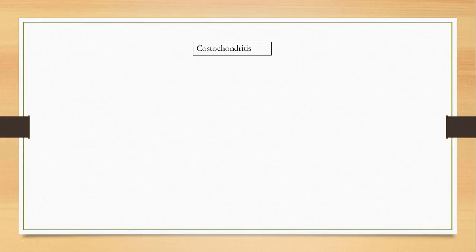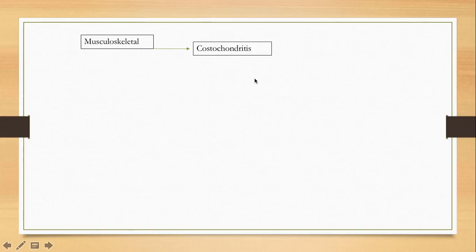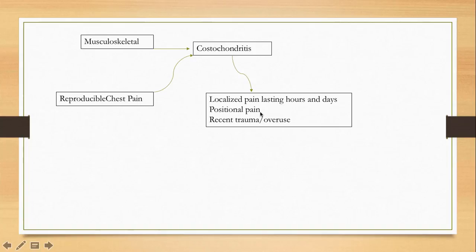We've now moved on from pulmonary and cardiac causes to extra-pulmonary causes of chest pain. Costochondritis is an extremely common cause — about 40% of patients with chest pain have costochondritis or muscular strain. The classic feature is reproducible chest pain. These patients usually have localized pain that lasts for hours to days.